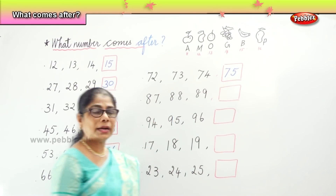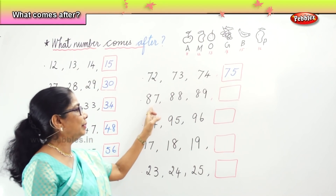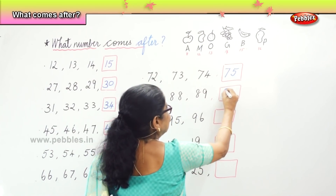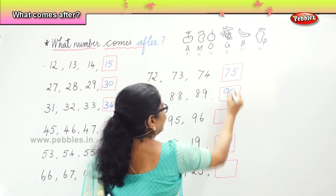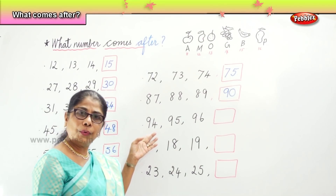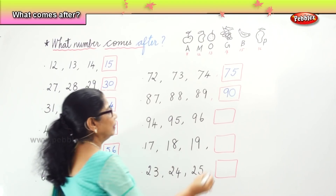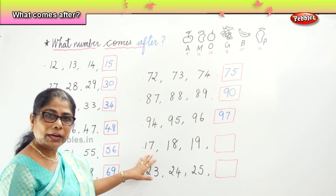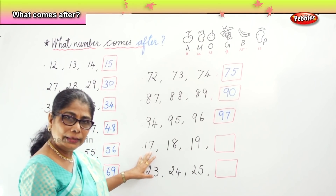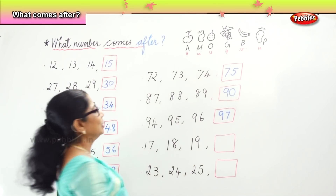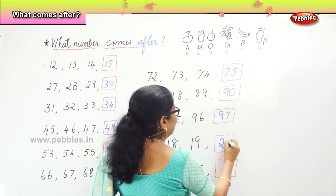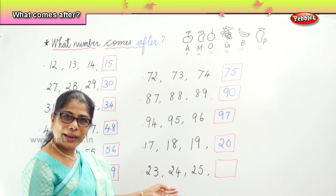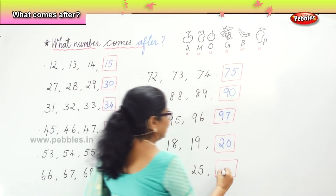What number comes after? Eighty-seven, eighty-eight, eighty-nine — ninety. What number comes after? Ninety-four, ninety-five, ninety-six — ninety-seven. What number comes after? Seventeen, eighteen, nineteen — twenty. Very good. Finally, what number comes after? Twenty-three, twenty-four, twenty-five — twenty-six.